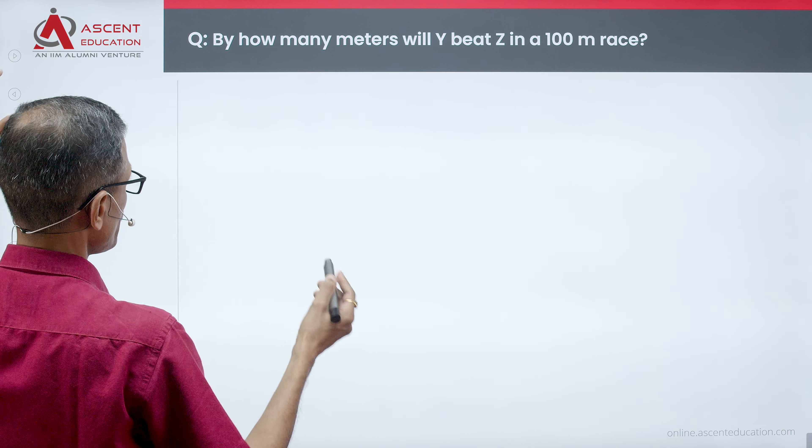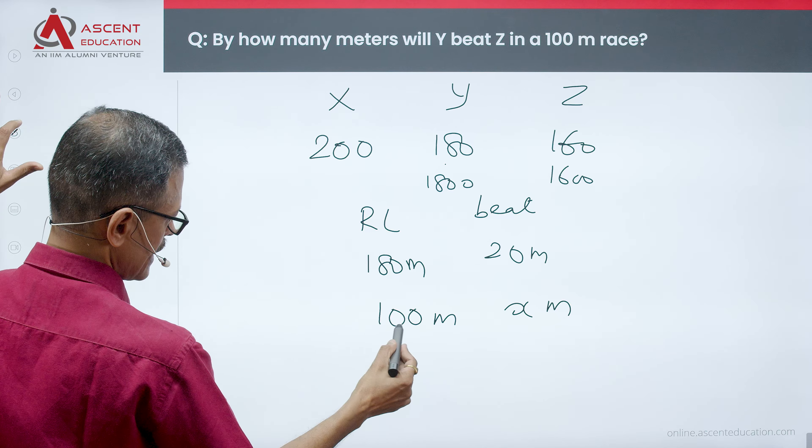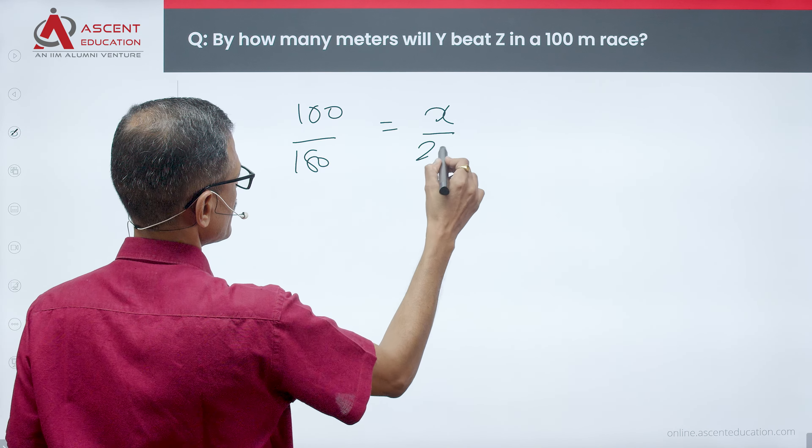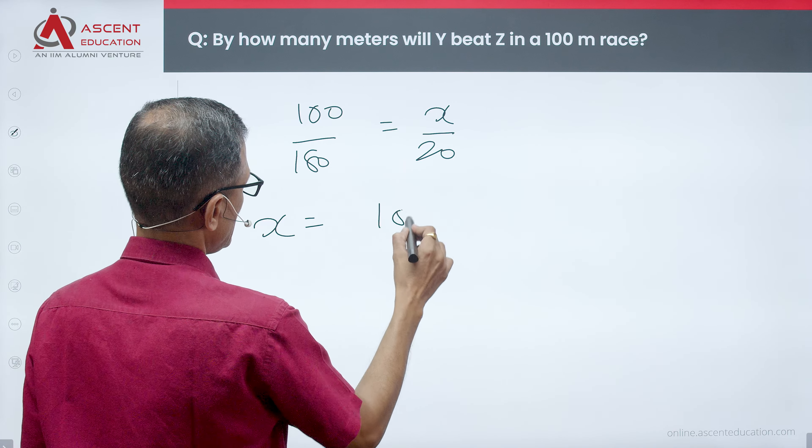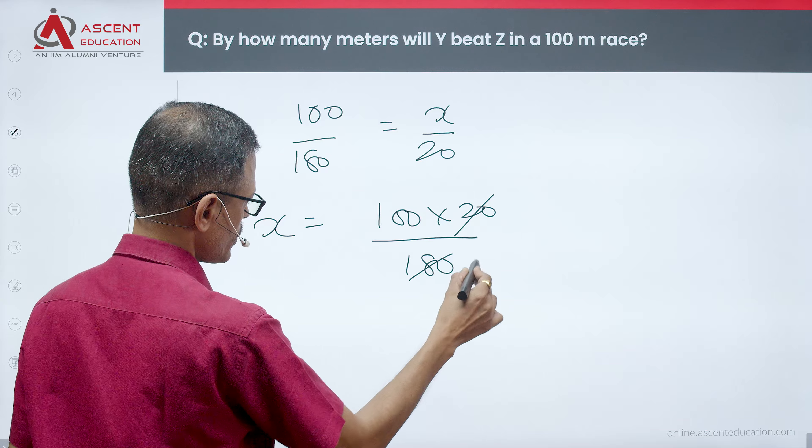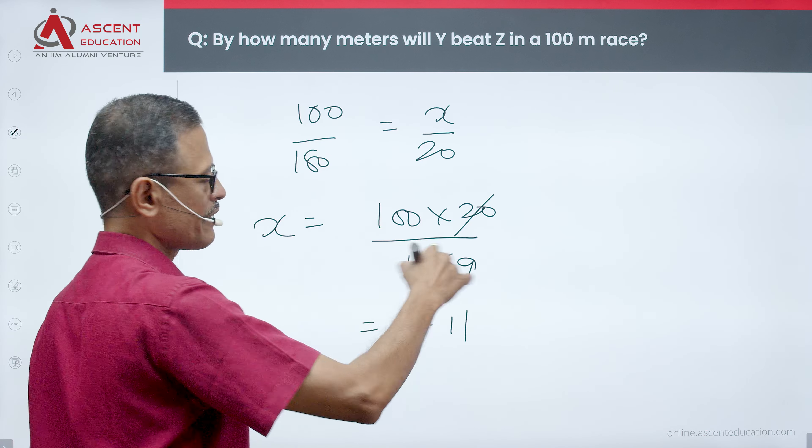100 by 180, because this is proportional. 100 by 180 is equal to X by 20. Solve for it. X is equal to 100 into 20 divided by 180, which cancels out as 9. 100 by 9 is equal to 11.11.